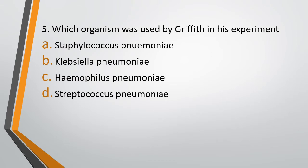Question number 5. Which organism was used by Griffith in his experiment? Option A, Staphylococcus pneumoniae; Option B, Klebsiella pneumoniae; Option C, Haemophilus pneumoniae; Option D, Streptococcus pneumoniae. The correct answer is Option D — Streptococcus pneumoniae was used by Griffith in his experiment.